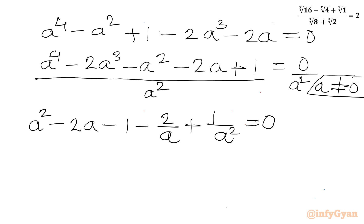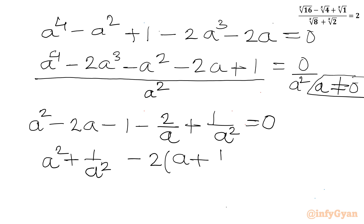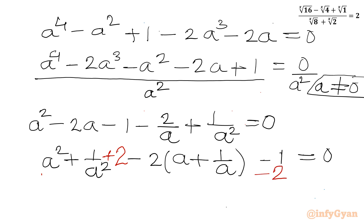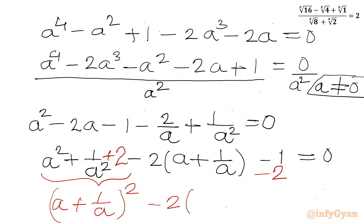Now I will group the first and last terms: (a² + 1/a²), and take -2 common from the second and second-last terms: -2(a + 1/a), leaving a constant of -1 equal to 0. I will add and subtract 2 to complete the manipulation, writing it as (a + 1/a)² - 2(a + 1/a) - 3 = 0.